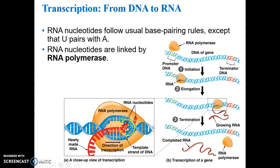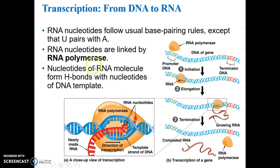The RNA nucleotides are put in place, linked together, covalently bonded together by the enzyme RNA polymerase. Most enzymes end in -ase, and many enzymes have in their name what they do - their function. So the enzyme RNA polymerase polymerizes the synthesis of an RNA molecule. The nucleotides of the RNA molecule form hydrogen bonds with the nucleotides of the DNA single-stranded template, up until the point where they detach.